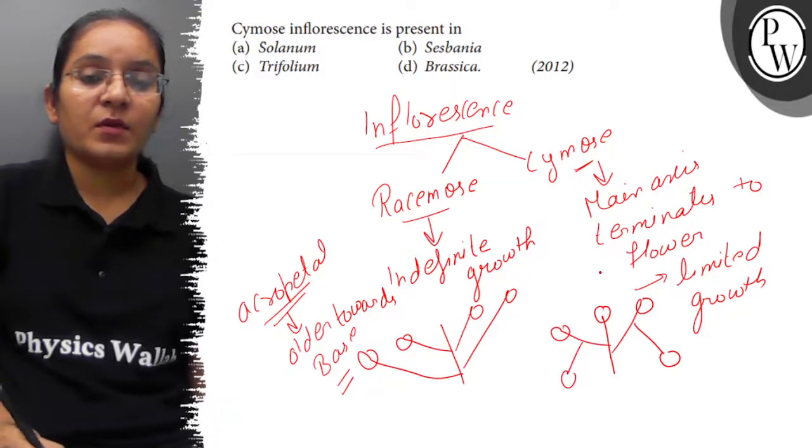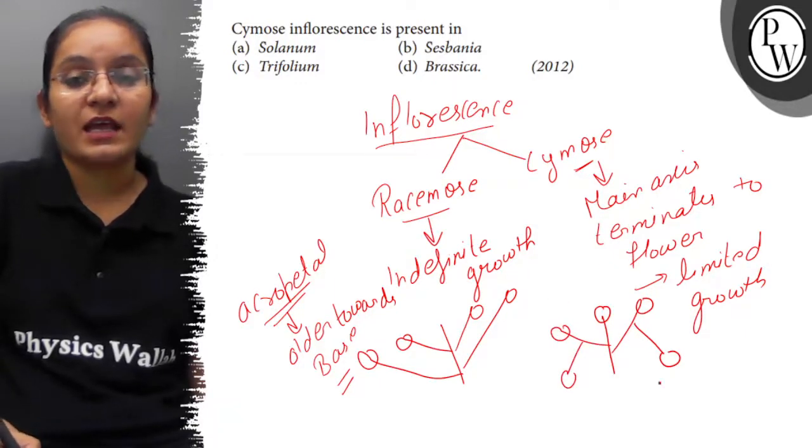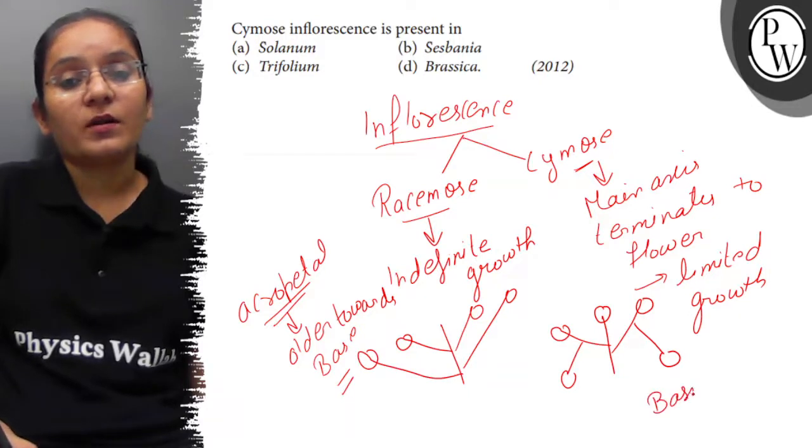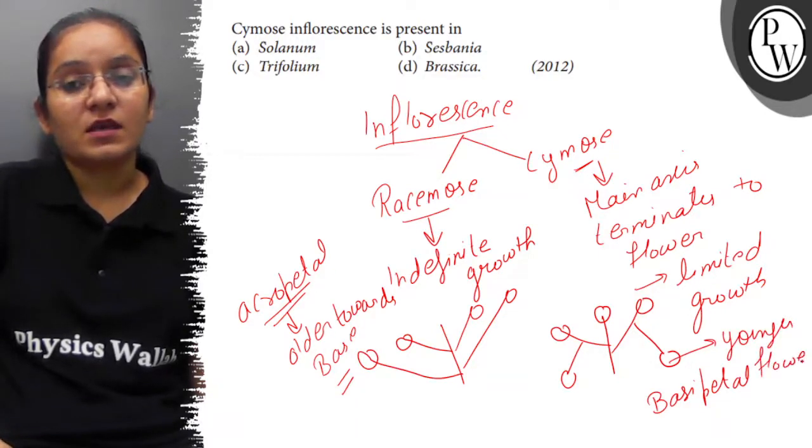The whole plant will be in a basipetal order. What does basipetal mean? The younger flower towards the base.